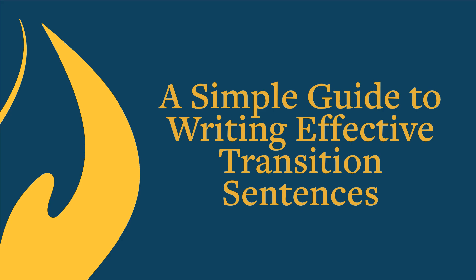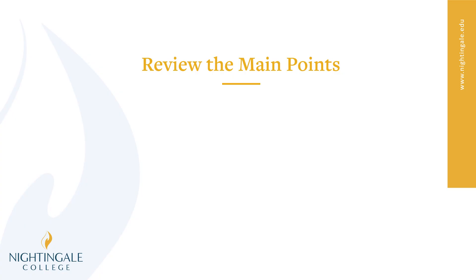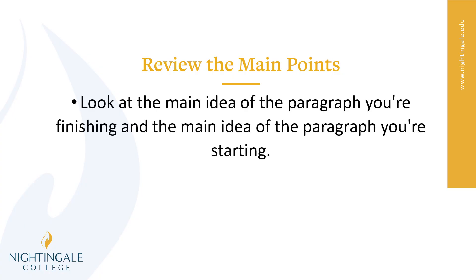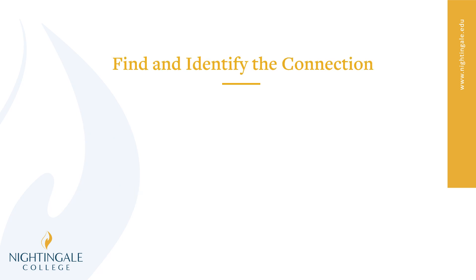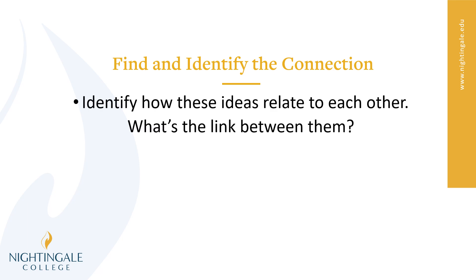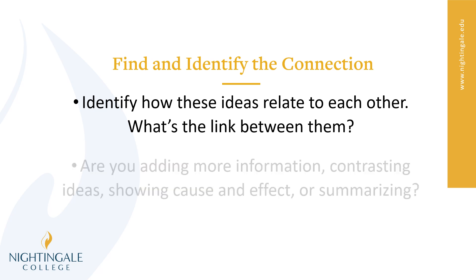Here's a simple guide to writing effective transition sentences. The first step is to review the main points — look at the main point of the paragraph you're finishing and the main idea of the paragraph you're starting. Look at the whole main idea of your paper. Are you reflecting those points in what you're saying? Find and identify those connections. Look at how the ideas relate — what is the link between the two ideas? If you are talking about dogs in one paragraph and cats in another, the idea that might link them is 'pets.'